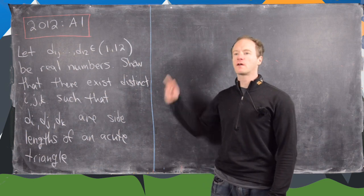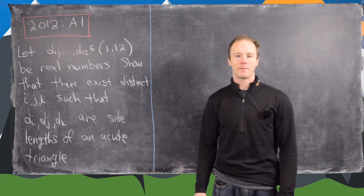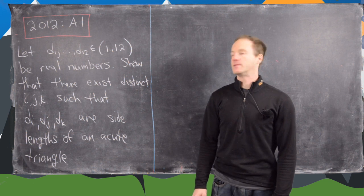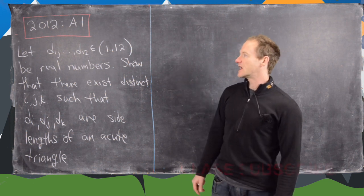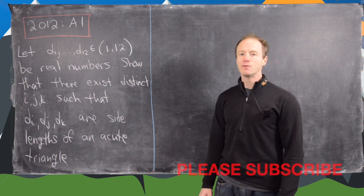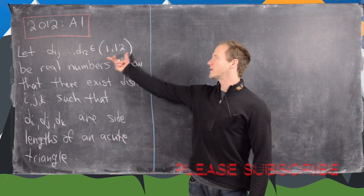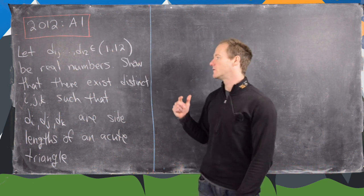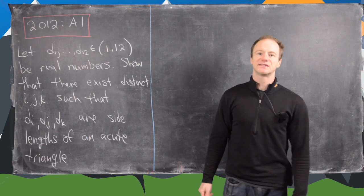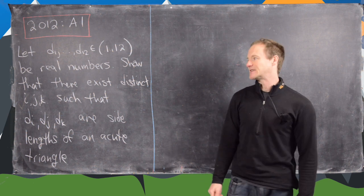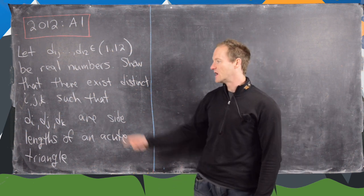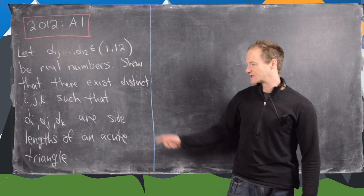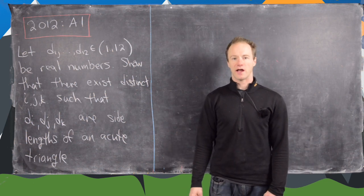In this video we're going to look at a solution to problem A1 from the 2012 Putnam exam. It says let d1 through d12 be real numbers from the open interval 1 to 12, and we want to show that there exist distinct indices i, j, k such that di, dj, and dk are side lengths of an acute triangle.